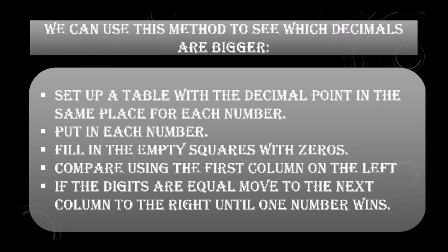Set up a table with the decimal point in the same place for each number. Put in each number, then fill in the empty squares with zeros. Compare using the first column on the left.